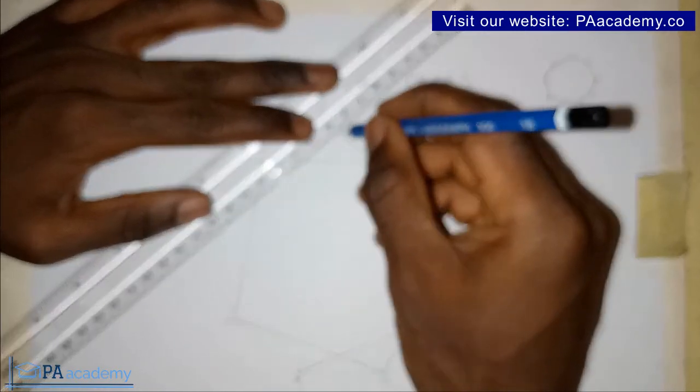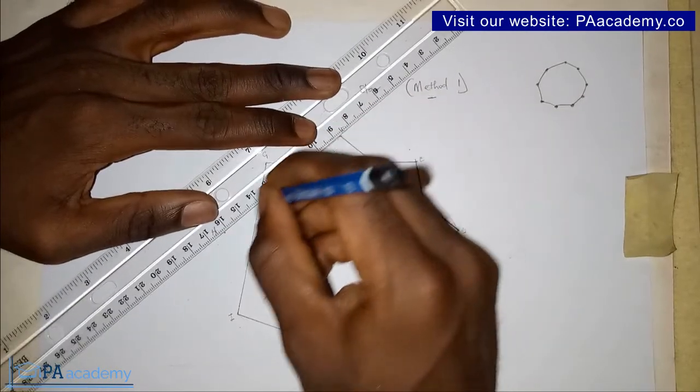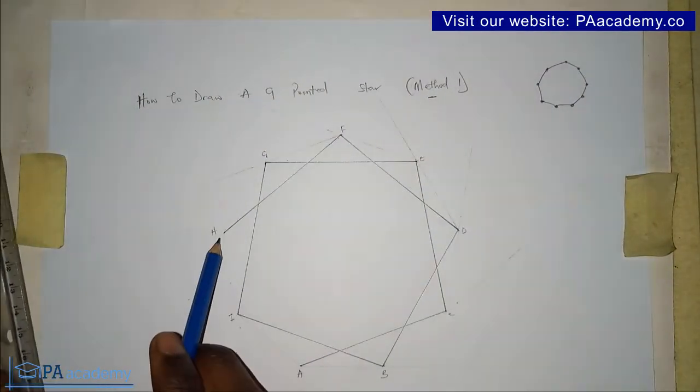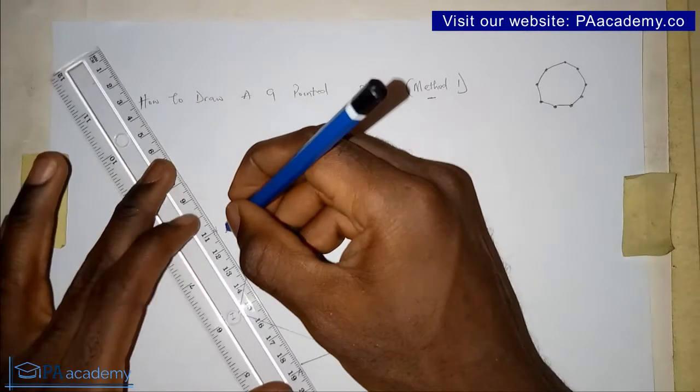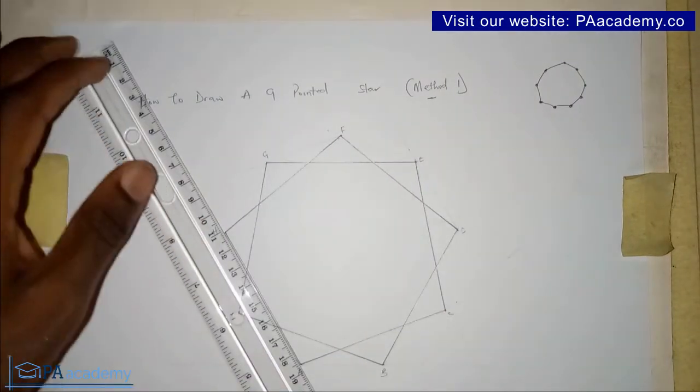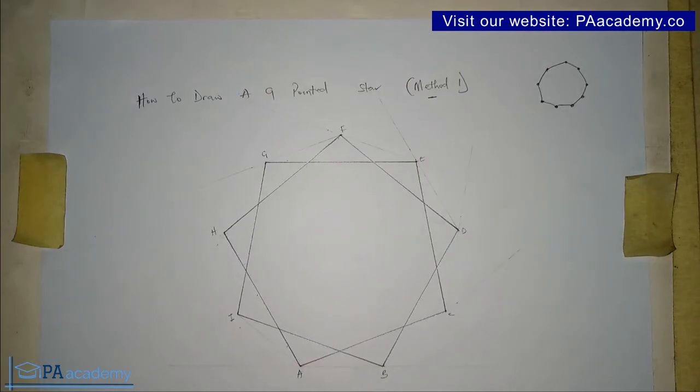From F now, we are going to draw it to point H. And then for the last one, from H to A. Alright, so this is it. Now we have our nine-pointed star. Like I said, this is method one.